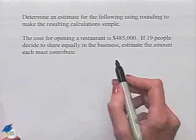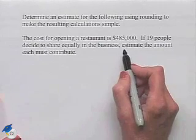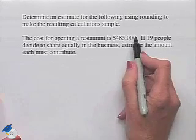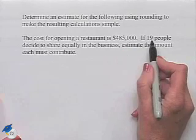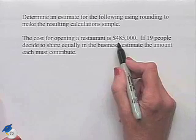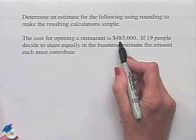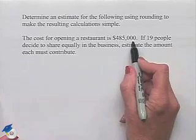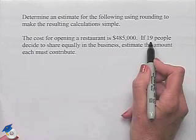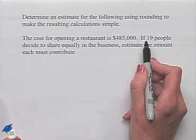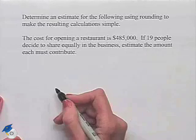We want to figure out the cost per person. That would be the total divided by the number of people. But notice if we do this exactly, we're going to have 485,000 divided by 19. Instead, we want an estimate for that by using rounding.